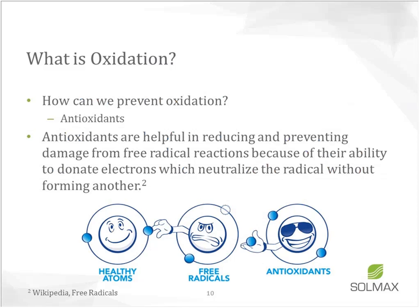How can we prevent oxidation? With antioxidants. When a free radical is created, it looks for an electron from a healthy atom. The antioxidant has a supply of electrons it can give to free radicals so they don't attack healthy atoms. The antioxidant gives back the lost electron to the free radical, stopping the chain attack. It's a simplified explanation — it's a little more complex with more phases — but we'll keep it there to stay within our time.